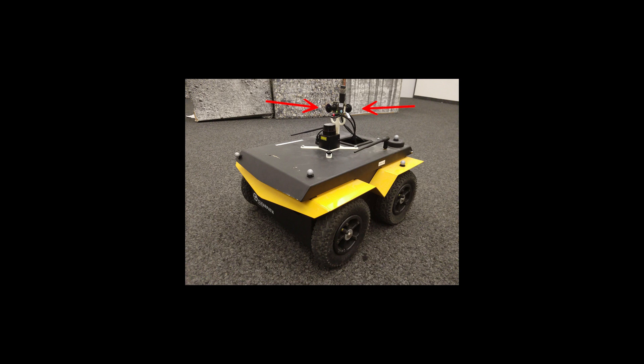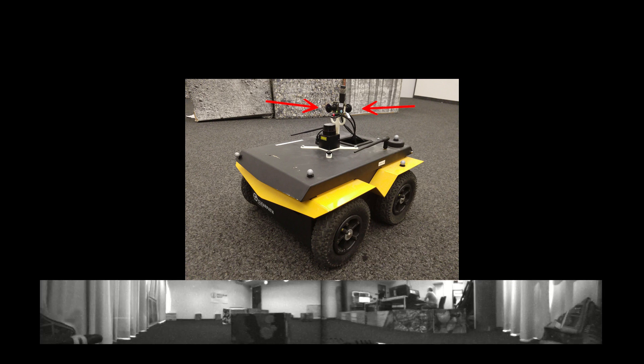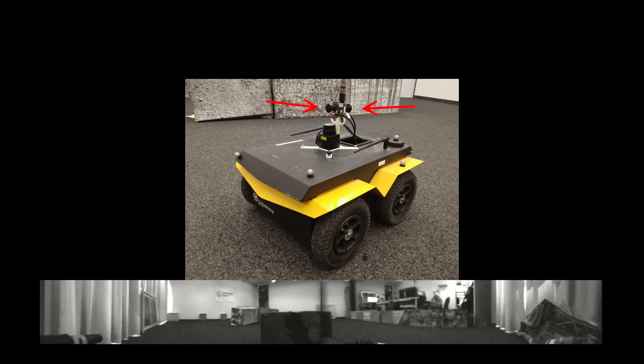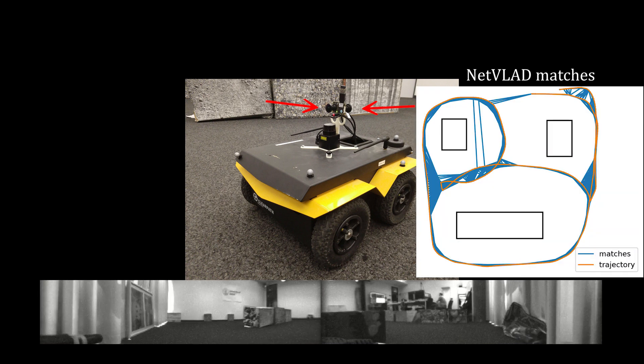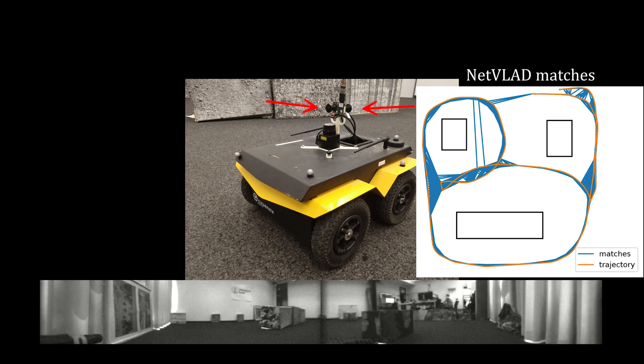For place recognition, we use two fisheye cameras whose images are stitched into a 360-degree panorama. The vertical field of view is purposely limited to make sure that different places in our flat experimental setup look differently.